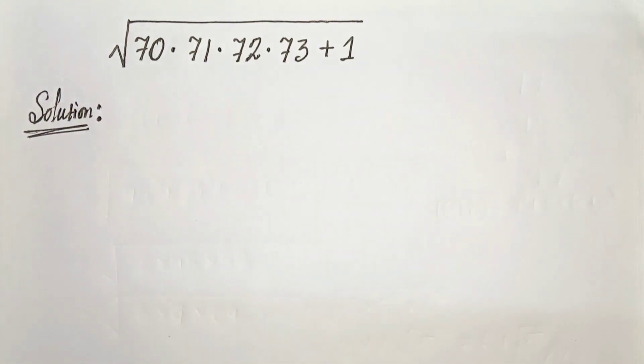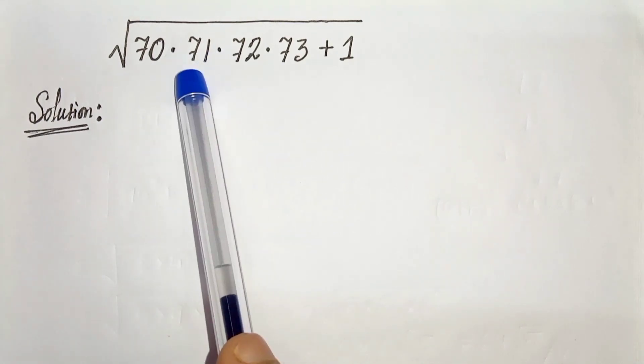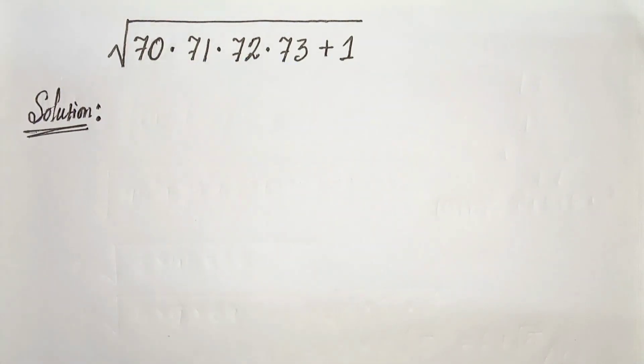First of all, let us consider 70 as x, then we can write 71 as x plus 1, 72 as x plus 2 and 73 as x plus 3.